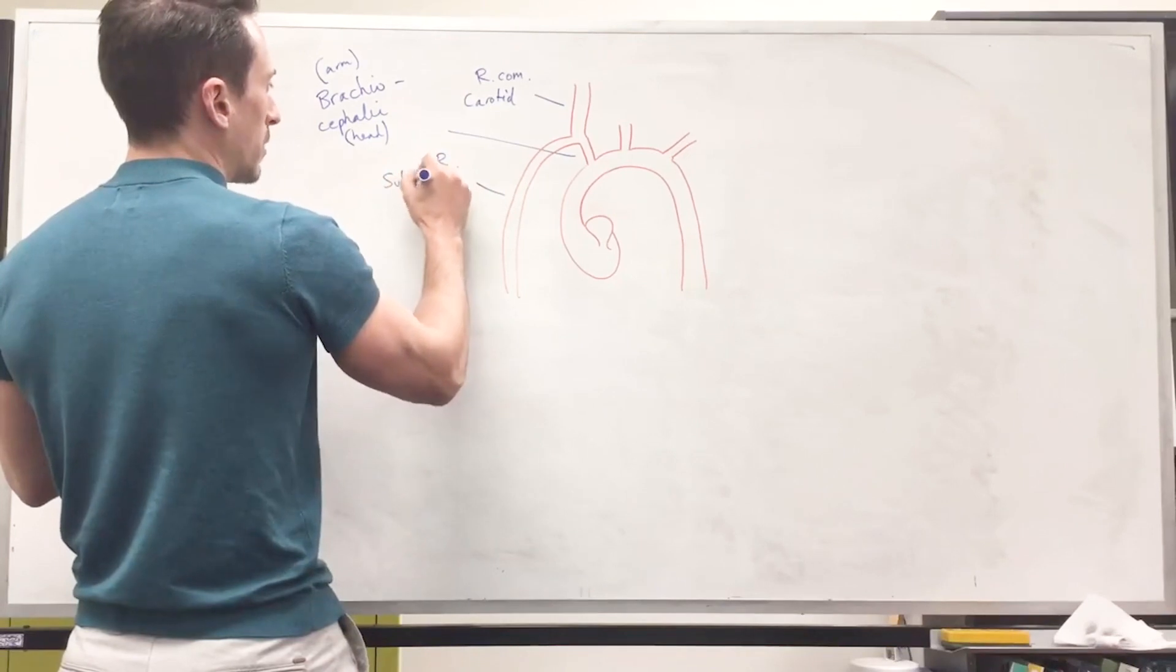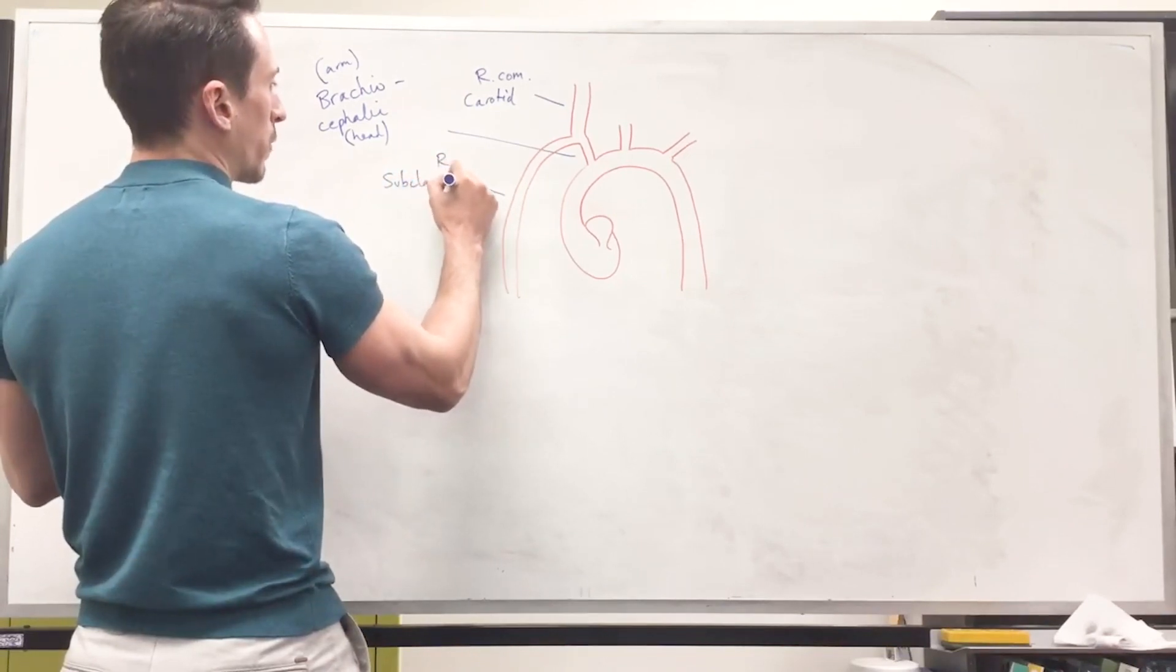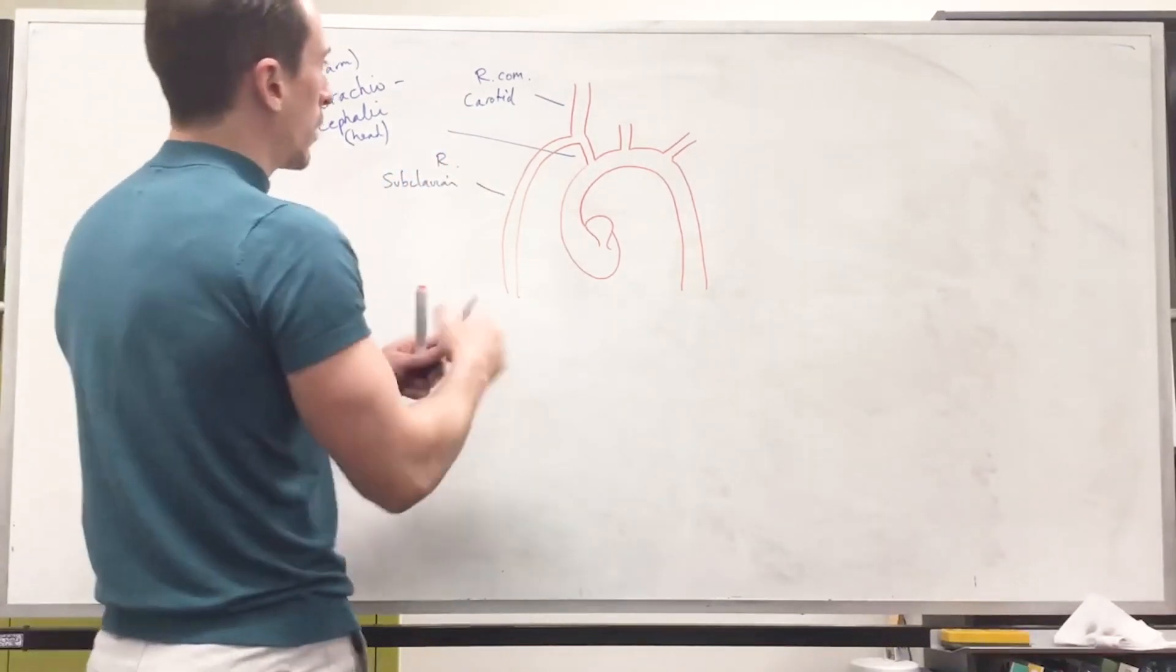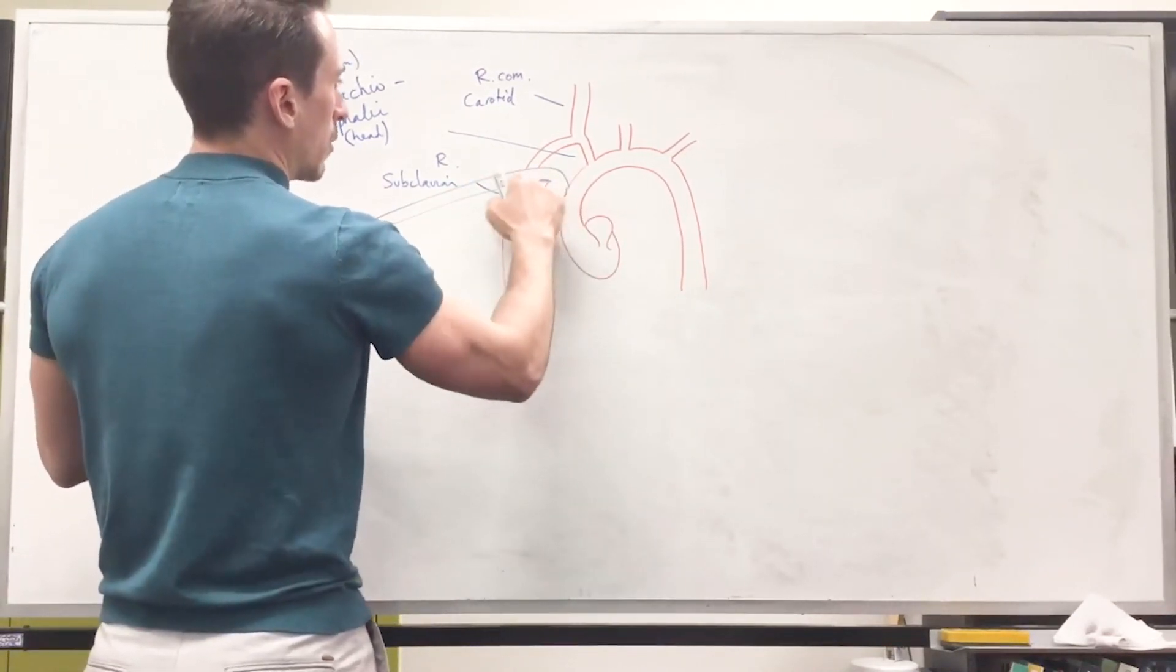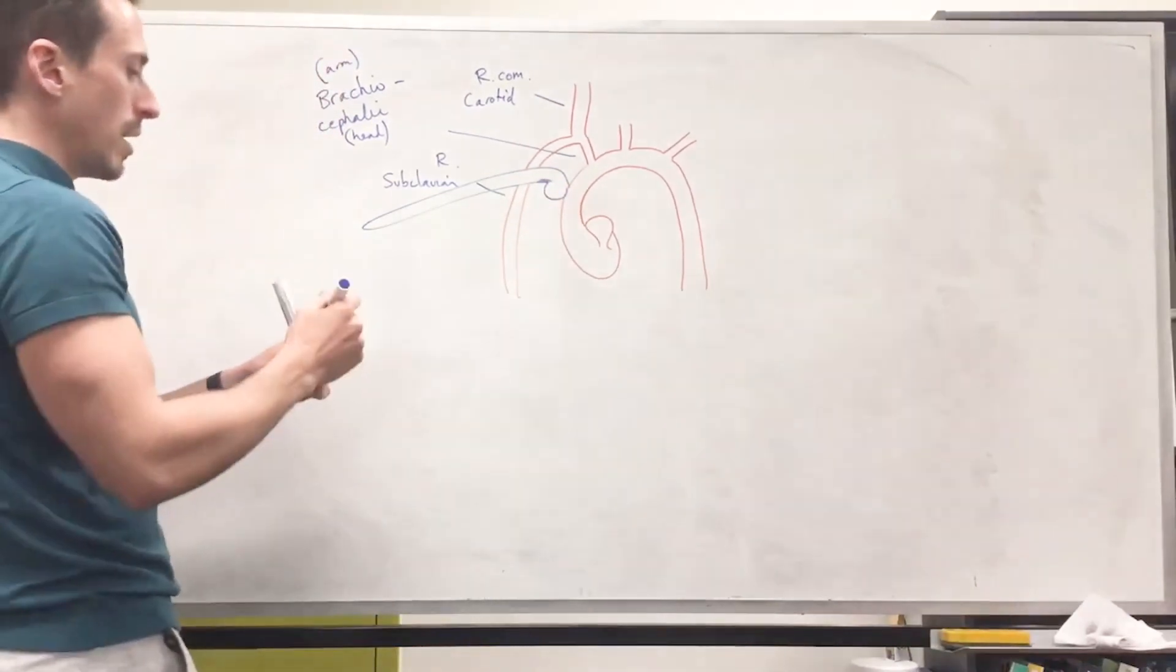Now, it's called the subclavian. Sub meaning below, clavian is referring to the clavicle, because what we've got here is the clavicle, and it goes behind the clavicle. Now, moving a little bit to the left,